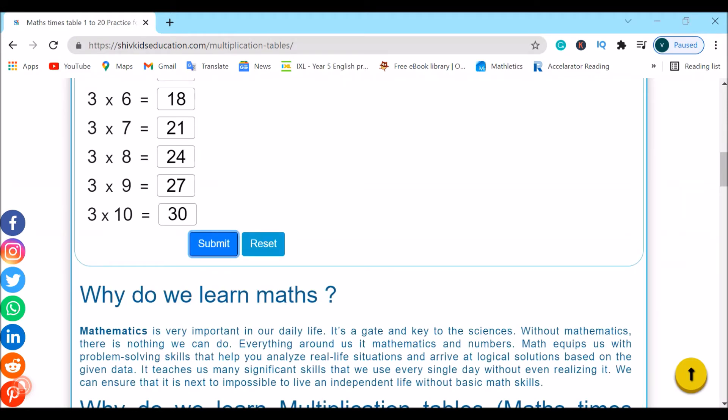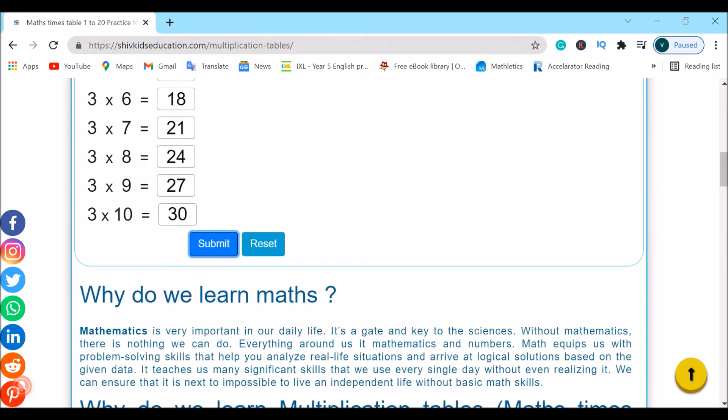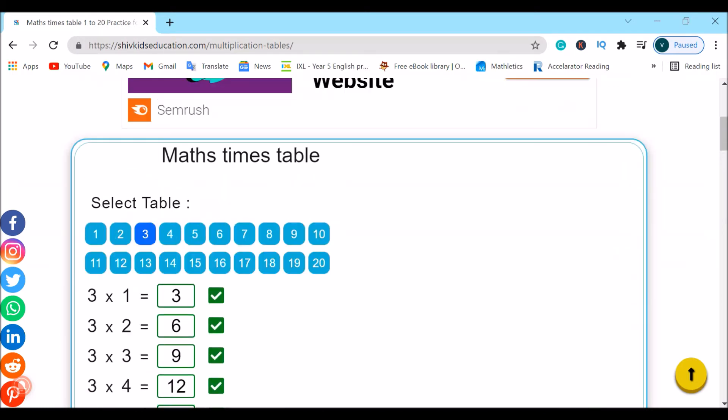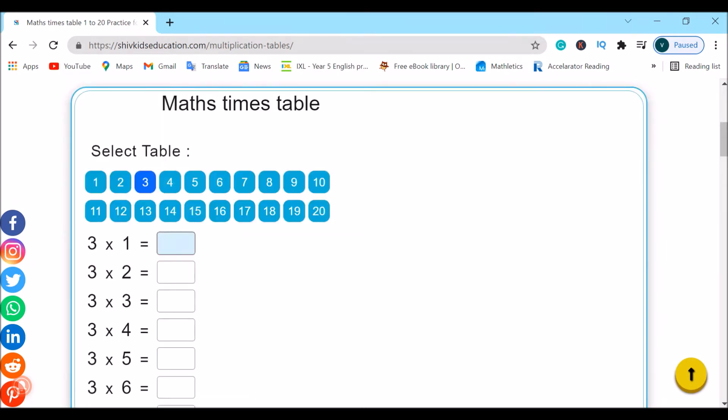As you can see, we have the Multiplications from the number multiplied by 1 to the number multiplied by 10. Then, after you finish all of these and check, you can click on Submit. As you can see, I have got all of my 3 Times Table questions correct. And if you want to do these again, suppose you got one wrong, suppose I got number 6 wrong as I wrote 19 instead of 18, then I can reset this quiz and I can do this again.